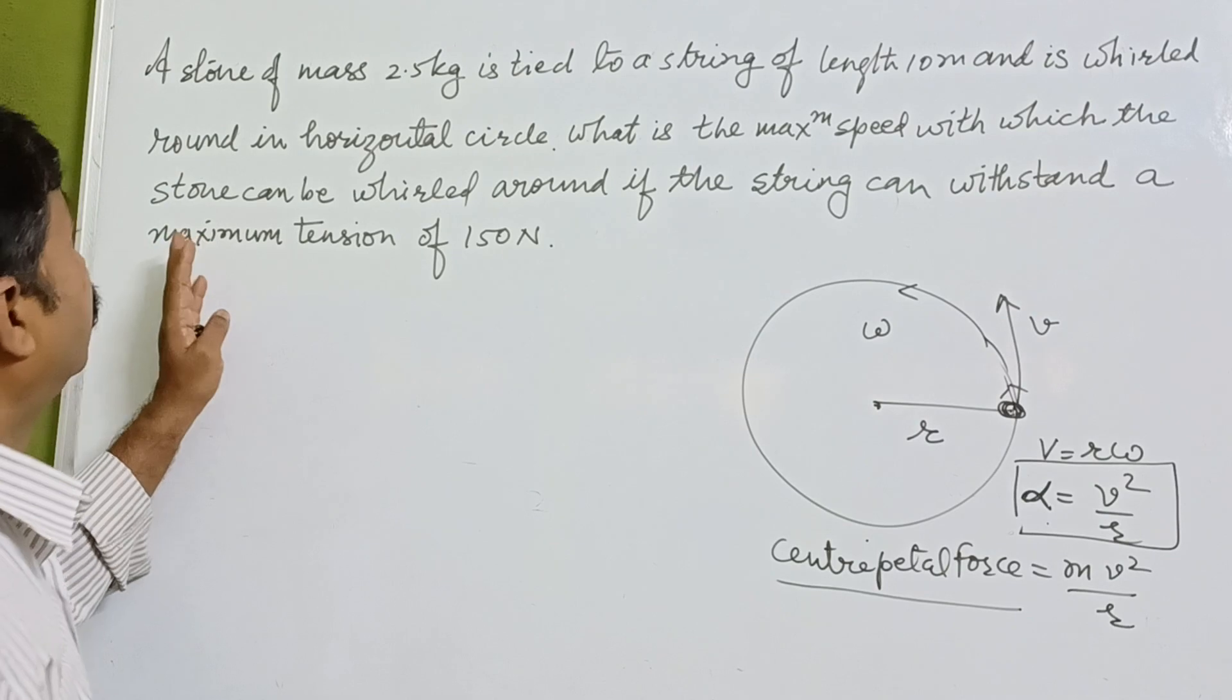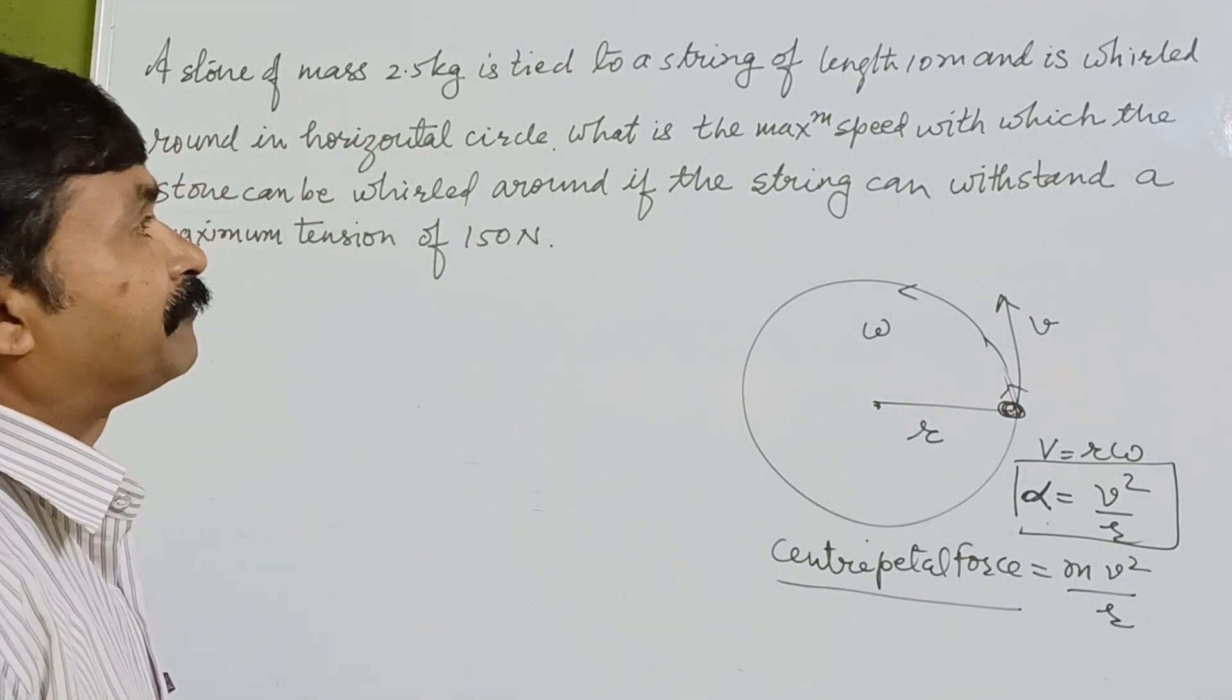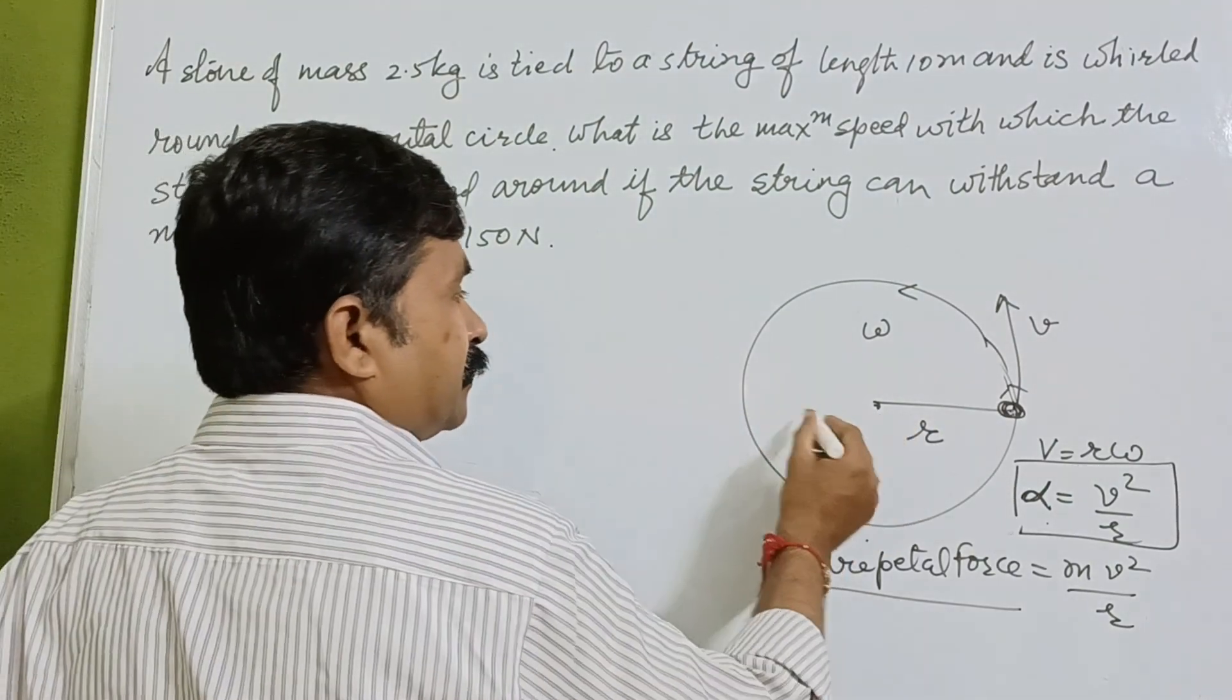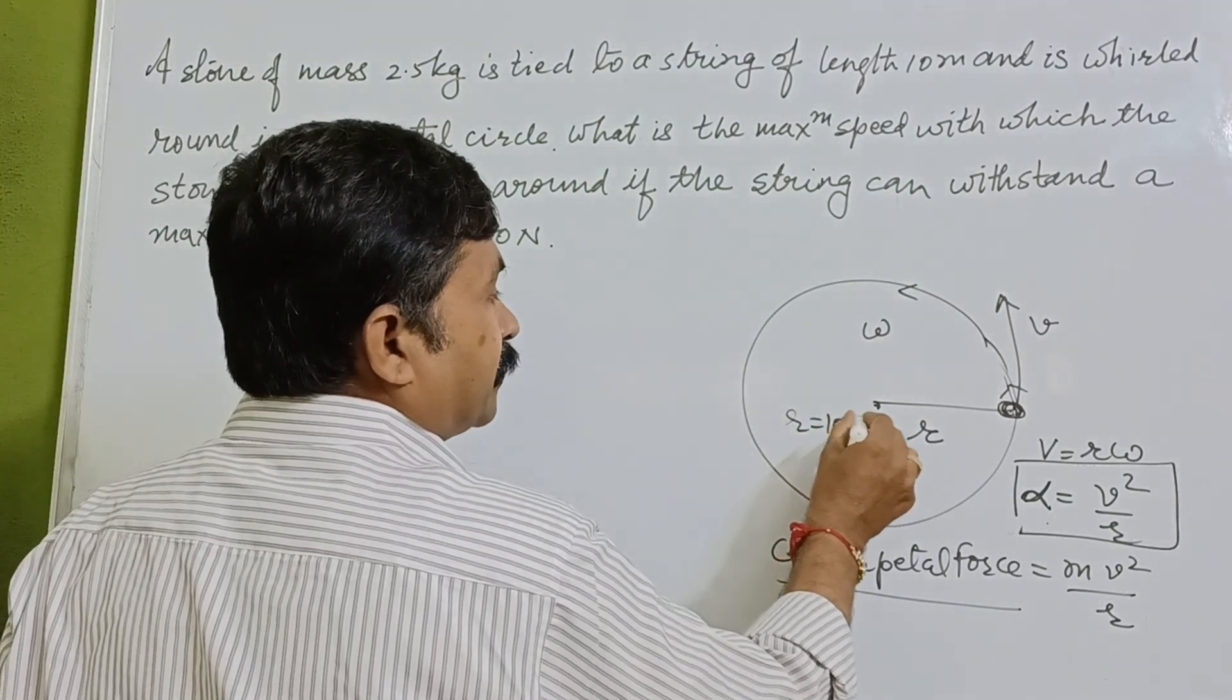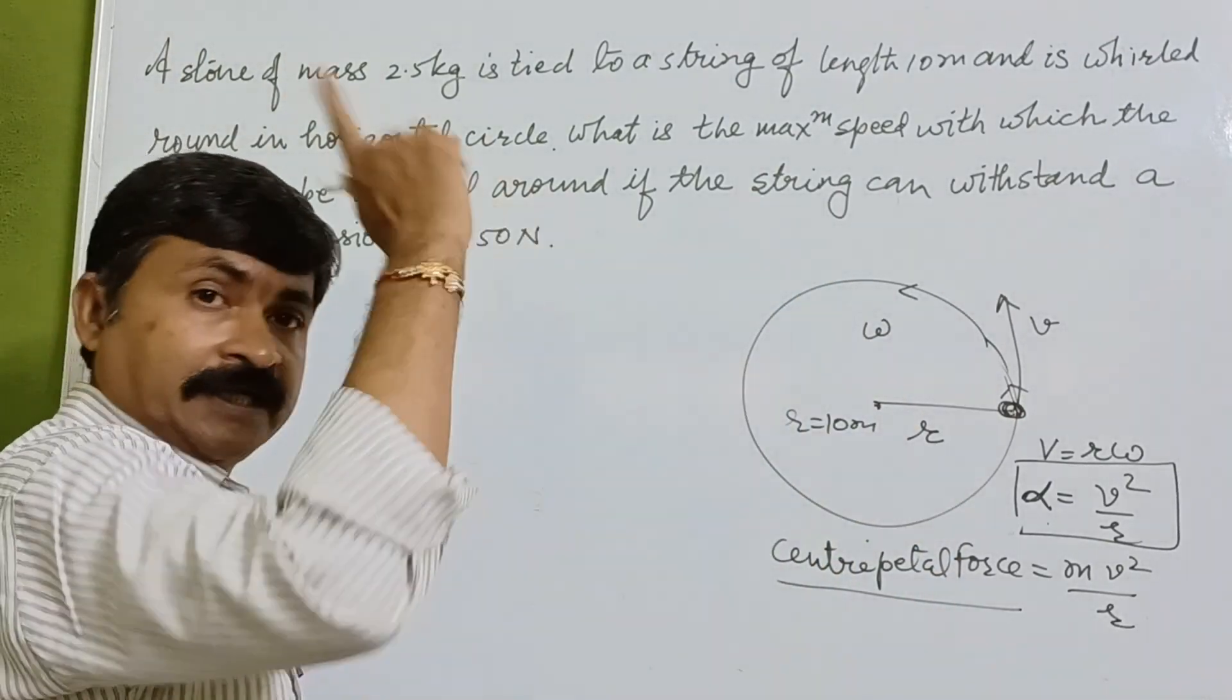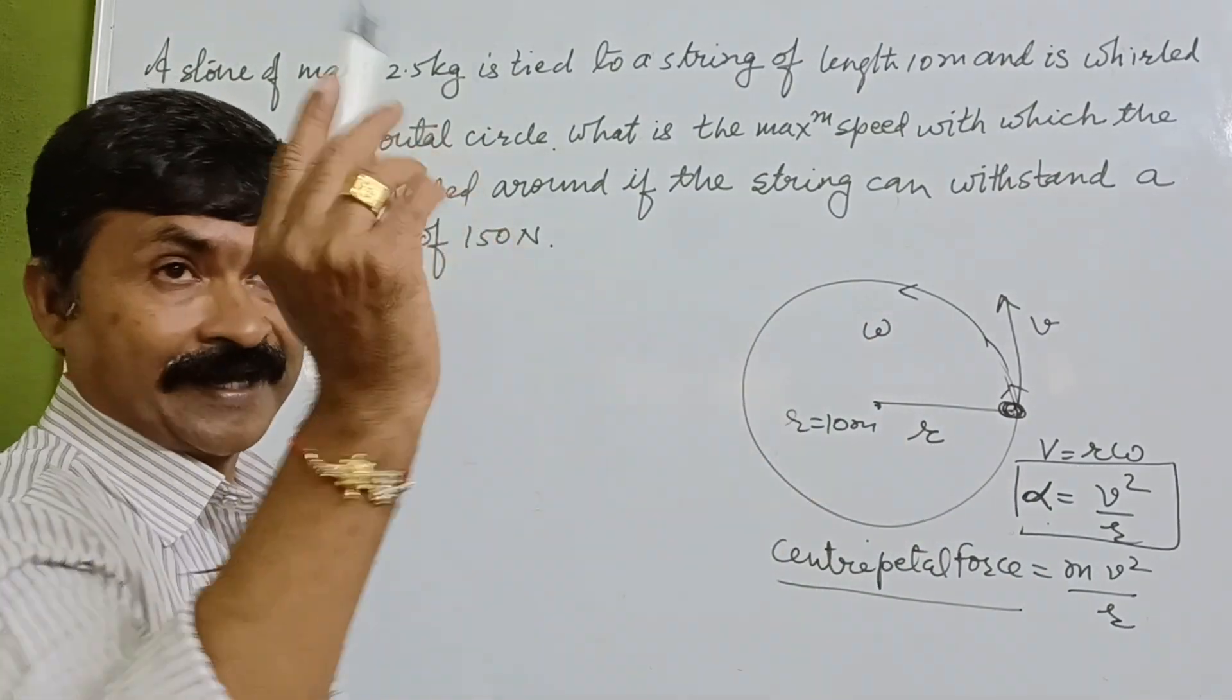Now if we go through the numerical, a stone of mass 2.5 kg is tied to a string of length 10 meter. So suppose if we take this, r is equal to 10 meter, and is walled horizontally in a circle, horizontal circle like this.